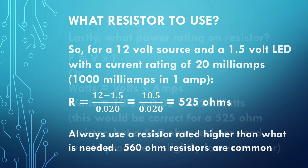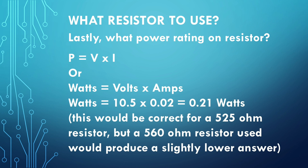Next, you need to figure out the power rating for your resistor. Power equals voltage times current in amps. Use the voltage across the resistor, not the LED. With a 12-volt supply and a 1.5-volt LED, there's 10.5 volts across the resistor. So: 10.5 × 0.02 = 0.21 watts. This example showed we'd need a 525-ohm resistor, so using a 560-ohm resistor will actually result in slightly less current through the circuit.